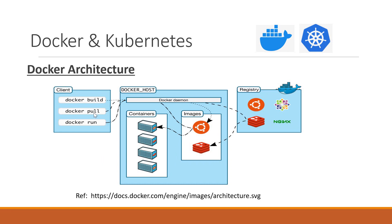If the client wants to create a Docker container, it will execute the docker run command, which will be sent to the Docker daemon. The daemon will first check whether the corresponding image is present in the Docker host. If the image is present, it will create a container in the Docker host. If not, it will pull the image from the registry first, then create the container. We can also run other commands to create Docker networks, Docker volumes, and so on.